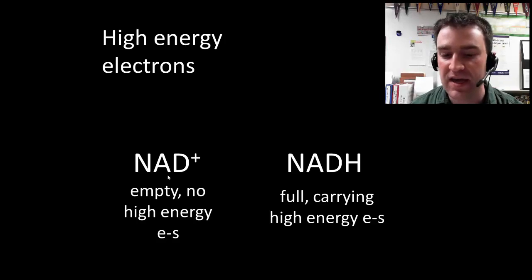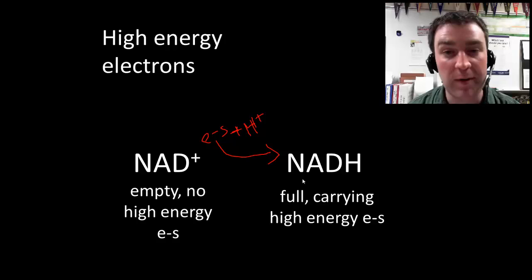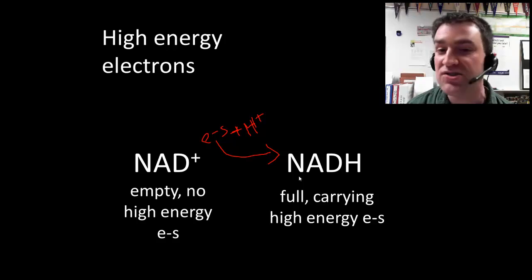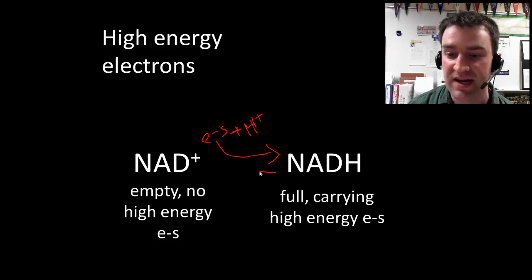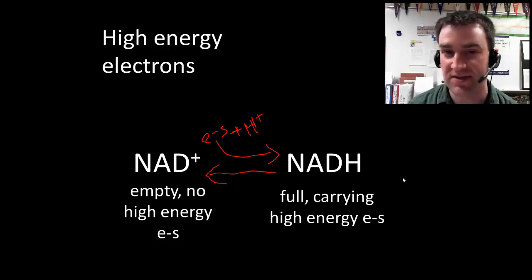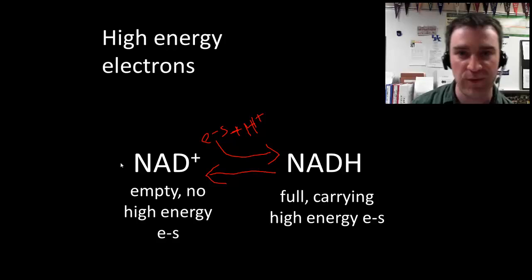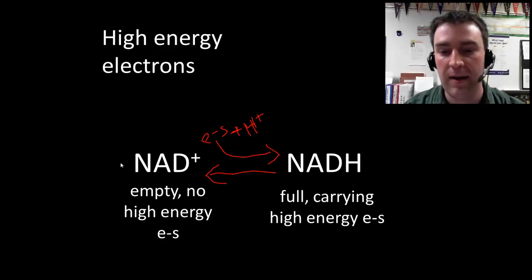You can think of NAD as being sort of an empty shuttle. It's called NAD when it doesn't have any high-energy electrons. Then when it picks up high-energy electrons, it becomes NADH, because as it turns out, it picks up electrons and also picks up an H+, which doesn't really matter. For our purposes, you can just think of that as the carrier that is full of high-energy electrons. It's heading to the electron transport chain to drop them off. When it does drop them off, it turns back into NAD. Then NAD will go back to the processes of glycolysis and the citric acid cycle and try to pick up high-energy electrons once again. So this is just a back-and-forth process that's constantly occurring if respiration is going on.